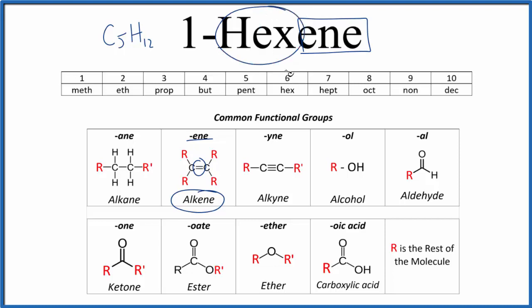The hex right here, that means six. So we'll have a chain of six carbons with a double bond. That double bond is going to be on the first carbon.